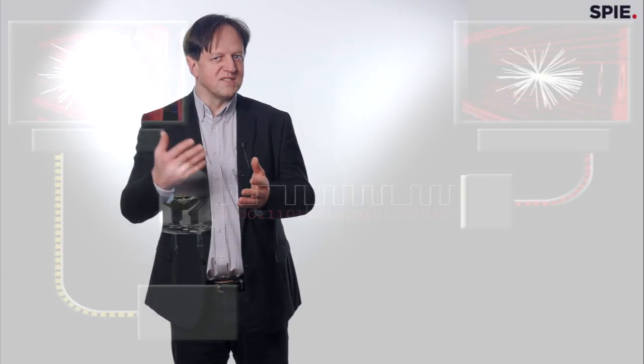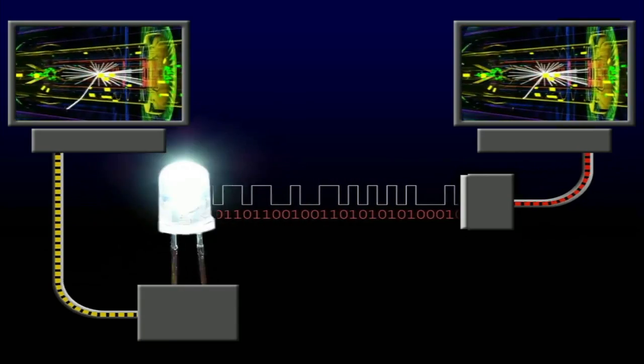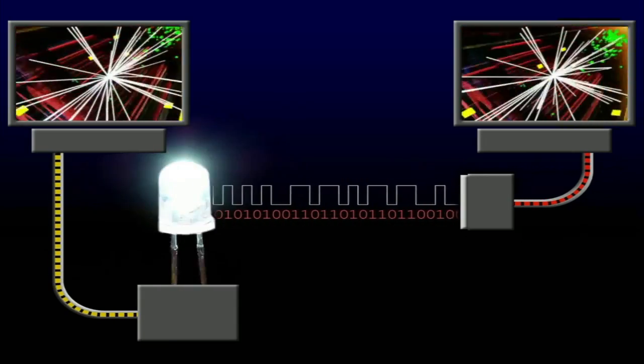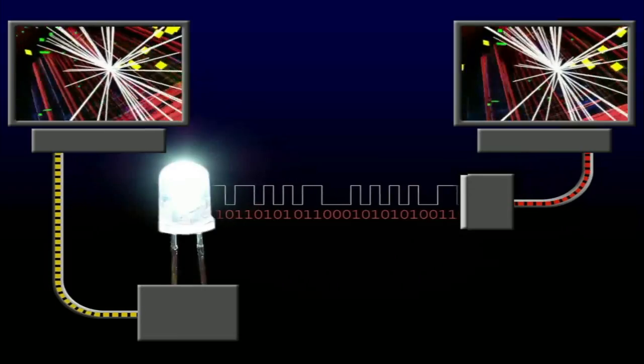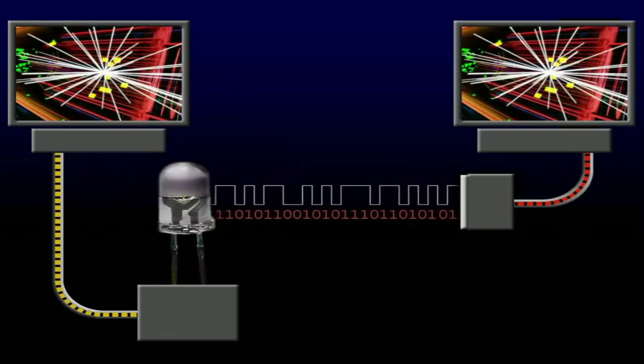And these variations in the intensity carry the information and we pack as much information into these intensity changes as we can. On the other end of the communication link, we have a photodetector, phototransistor, and that is like the human eye.